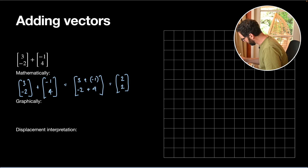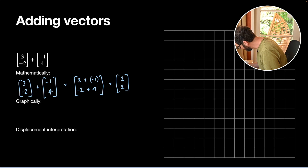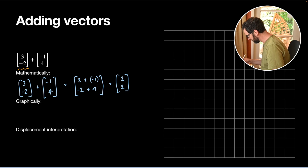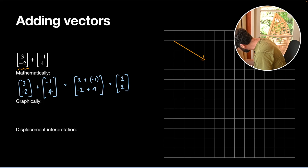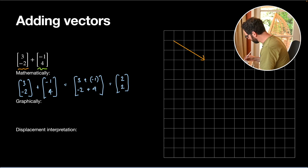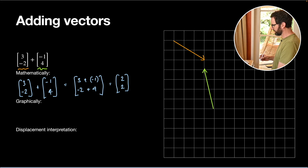But this has a meaning in terms of visuals as well. If I take my two vectors and draw them separately: the orange one goes 3 to the right and 2 down, and the green one goes negative 1 — so 1 left — and 4 up. There are my two vectors.